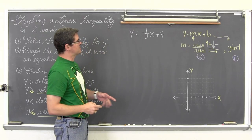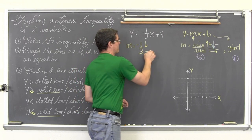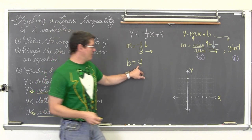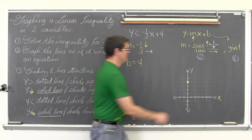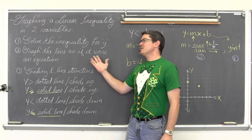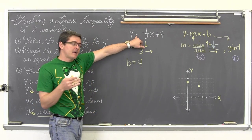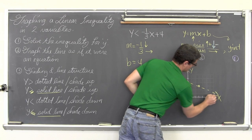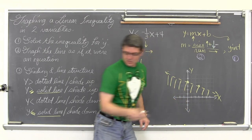I am going to do three examples. This first one has a slope of negative one-third, so we are going to go down one and over three. We have a y-intercept of four, so we go up to y equals four on the y-axis, then down one and over three from that point. Now, the inequality says y is less than negative one-third x plus four — not less than or equal to — so this is going to be a dotted line. And since y is less than, y values get smaller as you go down, so we shade below the line.